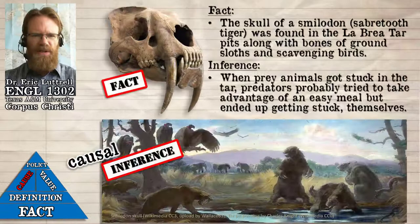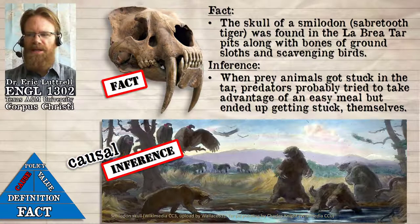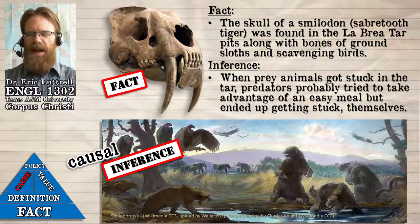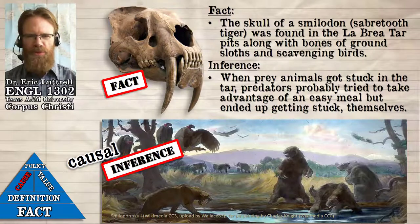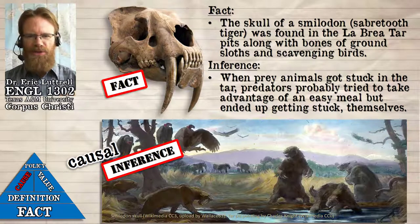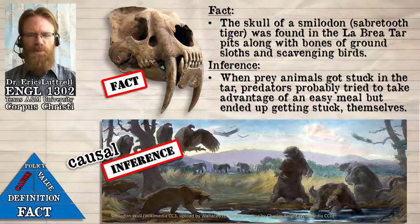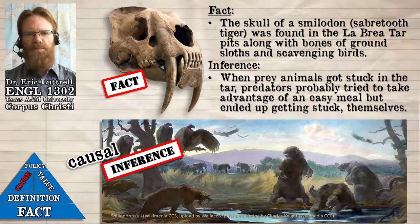We can see this division in the example I first used to distinguish between a fact and an inference — the Smilodon skull in the La Brea Tar Pits. The actual bones found in the La Brea Tar Pits are facts, those are independently verifiable — their arrangement, their composition. But how they got there, that's an inference. We have to come to a best guess, and in particular that's a causal inference. Causal inferences are very intuitive a lot of the time, but we can be wrong about them, which is why we want to separate out causation.